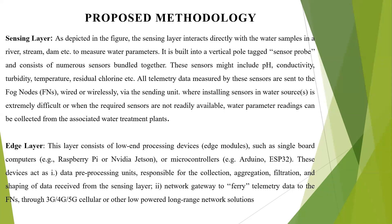It is built into a vertical pole tag sensor probe and consists of numerous sensors bundled together. These sensors might include pH, conductivity, turbidity, temperature, residual chlorine, etc. All data measured by these sensors are sent to the fog nodes via the sending unit. Installing sensors in water sources is extremely difficult when the required sensors are not readily available. Water parameter readings can be collected from the associated water treatment plants.